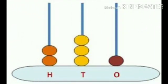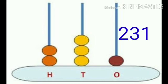In another example, 2 beads at the hundreds place represent 200, 3 beads at the tens place represent 30, and 1 bead at the ones place represents 1. The number is 231.